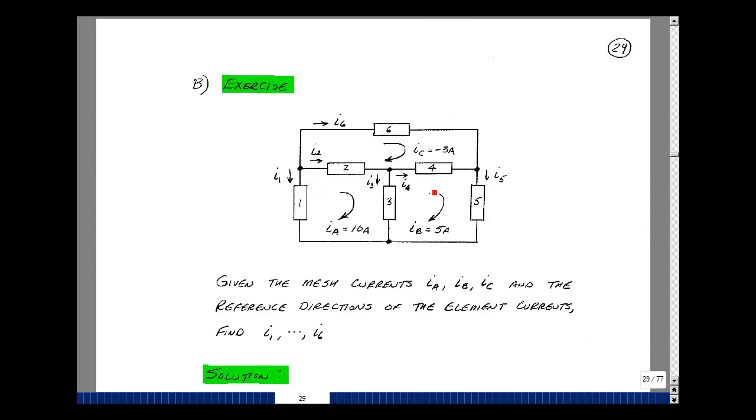Let's look at an example. Suppose that I have six elements, and I define the current in each of these elements. We can do it arbitrarily, but just select the direction. Suppose that I know mesh current I sub a, I sub b, and I sub c. Can we solve for the currents in the elements I1 through I6?